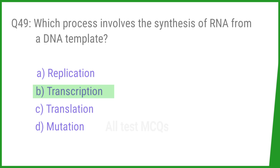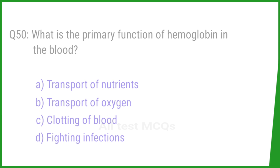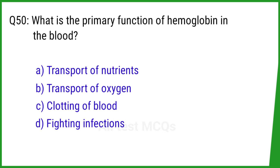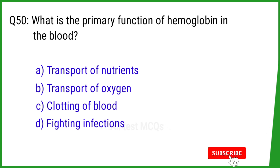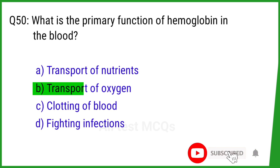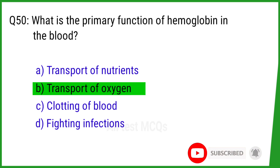Question number 50. What is the primary function of hemoglobin in the blood? The right answer is option B: Transport of oxygen.